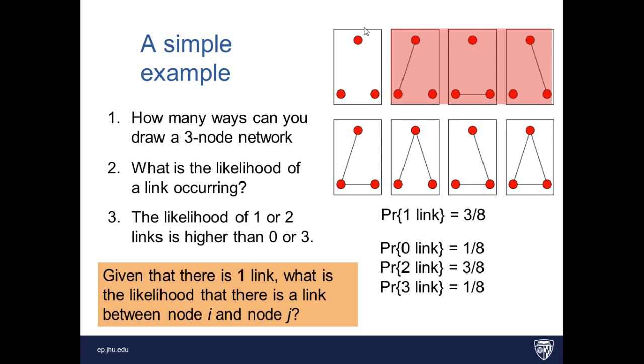I'm assuming you've paused the video and written down a solution. So what we see is the likelihood that there is a link from node i to node j, given that there is only one link in the network, is one third. So when we say, given that there's only one link in the network, we are eliminating these other possibilities where there is either more or less than one link in the network, and we're restricting our search, our sample space, to just the configurations with one link. And then the likelihood from i to j, there's one option where that's success and two where that's not a success, so the answer would be one third.